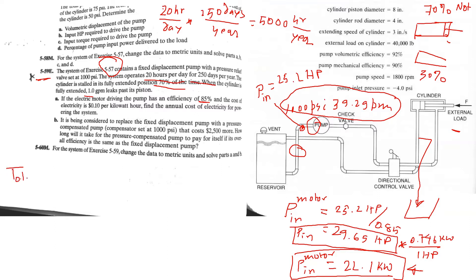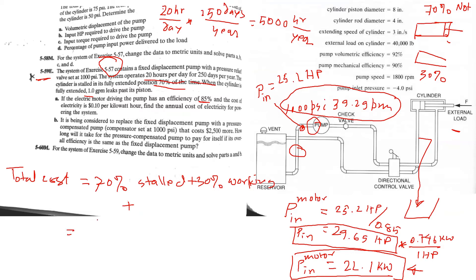To calculate the total yearly cost, we consider two periods: 70% of the time the cylinder is stalled and does no useful work, and 30% of the time it is working. When the cylinder is stalled, it actually develops higher pressure — up to the pressure relief valve setting. When running, the system operated at about 908 psi. But when stalled, the system develops up to 1,000 psi, so it actually takes more power when it is not working.